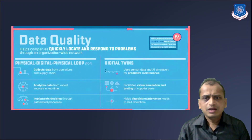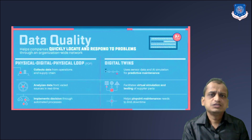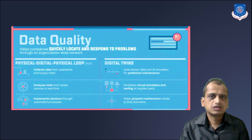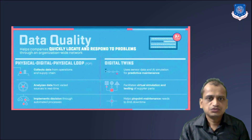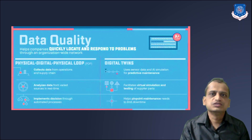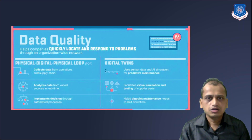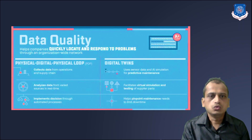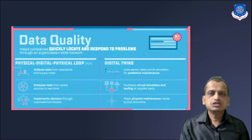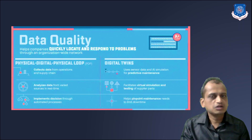Regarding data quality, a physical-digital-physical loop should exist. Physical devices have digital copies; analog signals from physical devices can be converted into digital signals so they can be analyzed further. Decision-making parameters are then fed back to the physical devices for monitoring. That is the physical-digital-physical loop. Digital twins are the virtual copies of whatever devices, sensors, and machineries you have — similar to the digital thread concept.